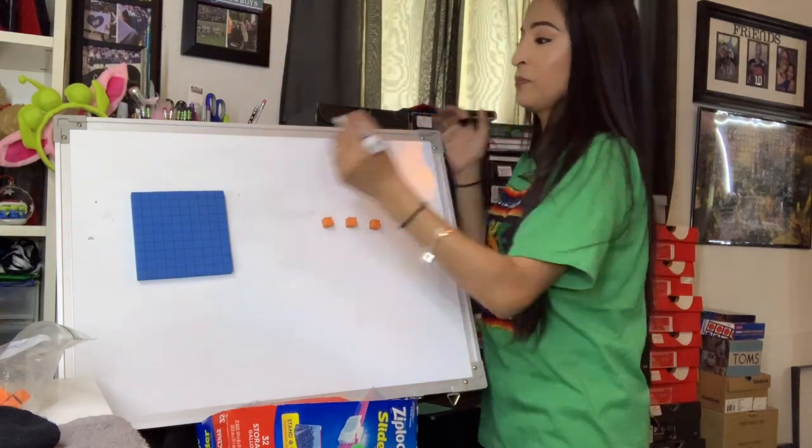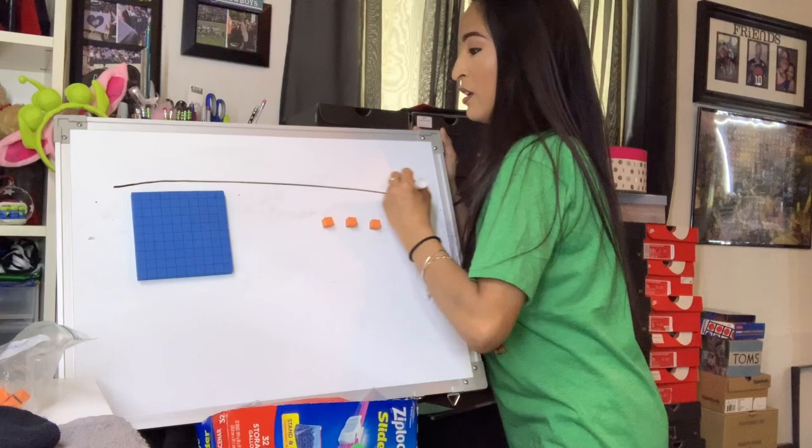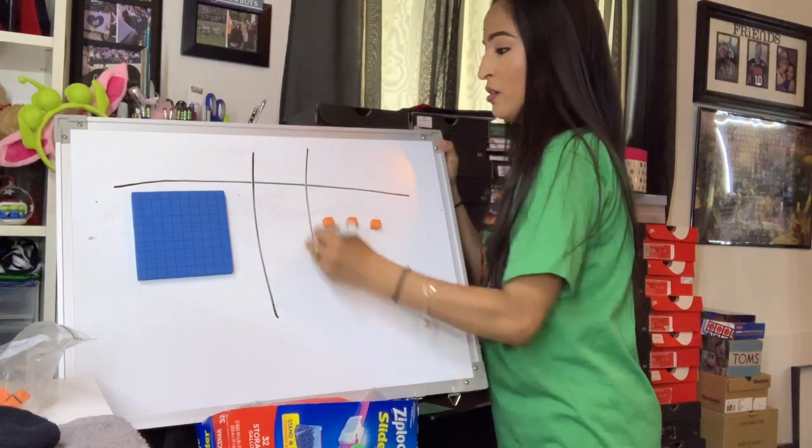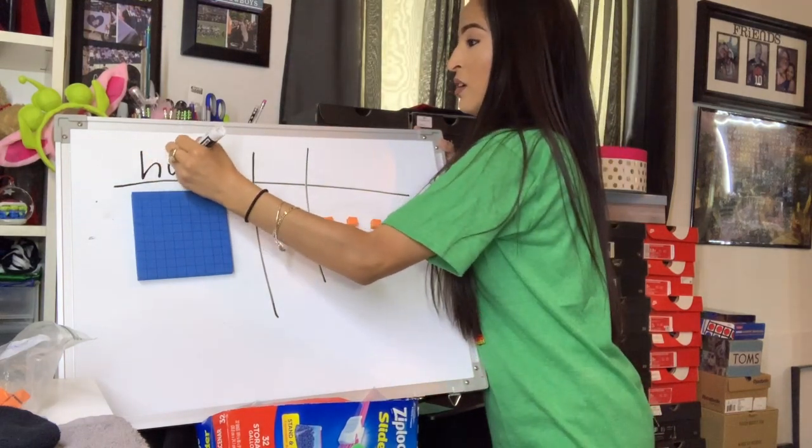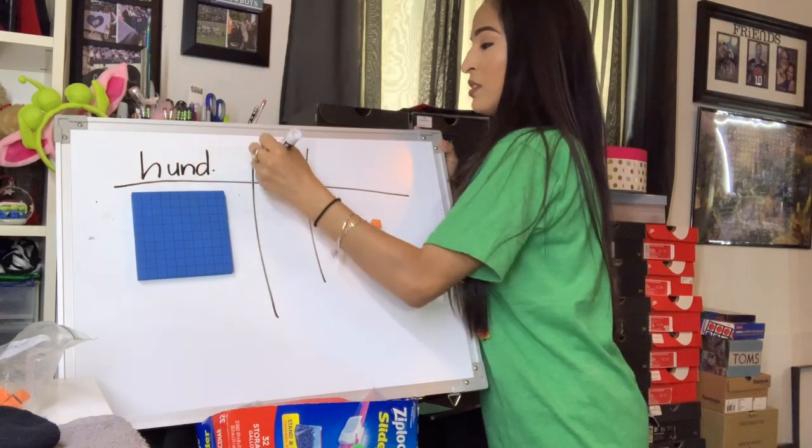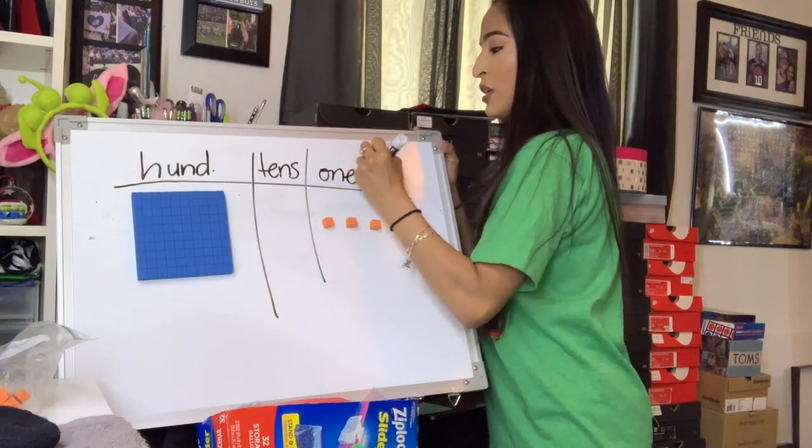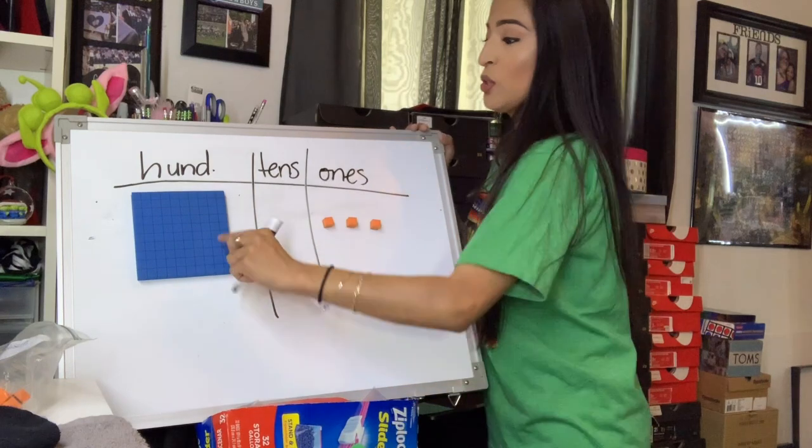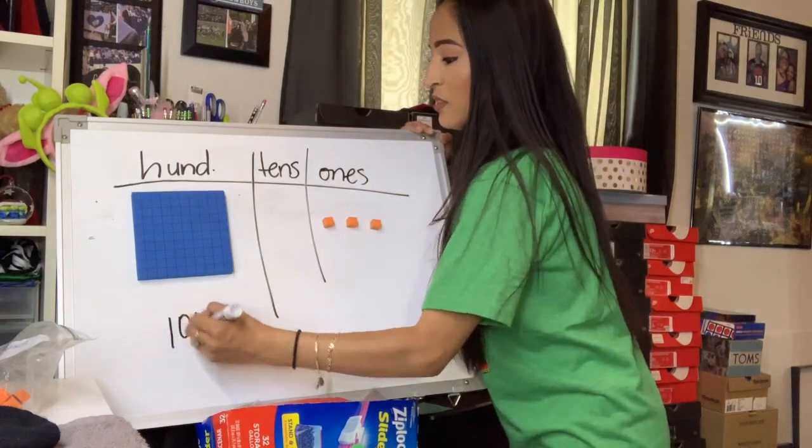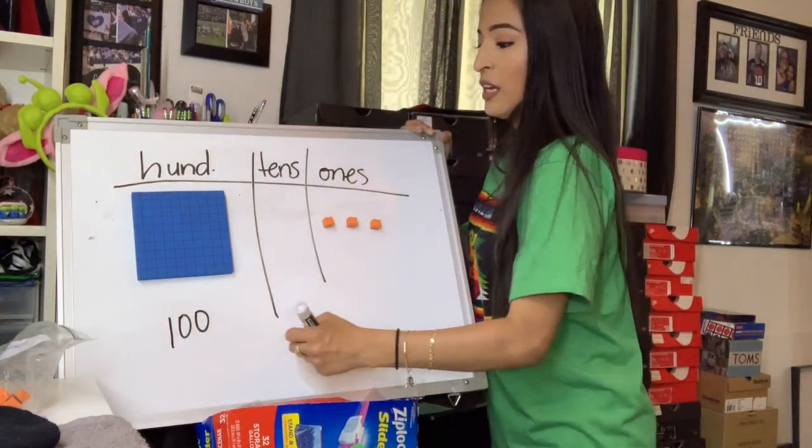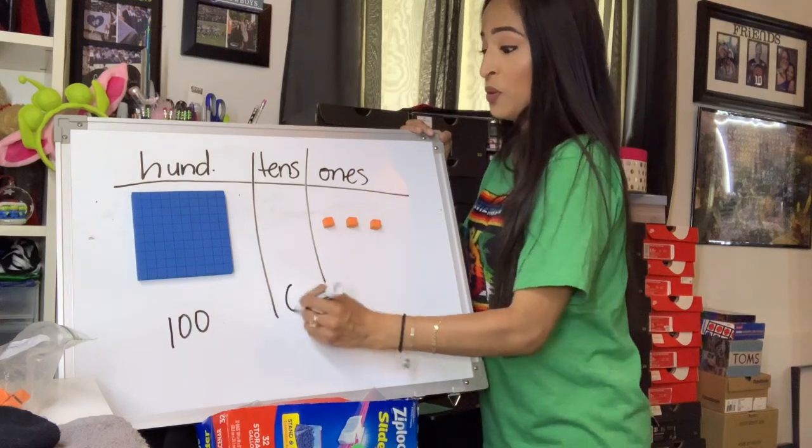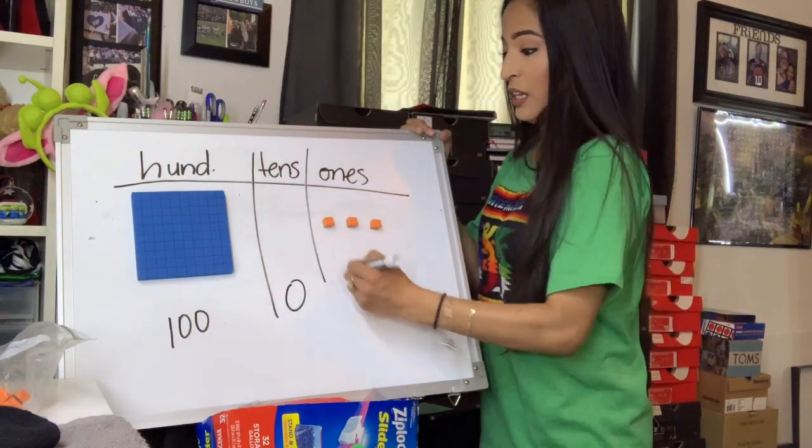So what we do now is we can make our chart. Hundreds, tens, and ones. So we have this as 100. We have zero here and three here.